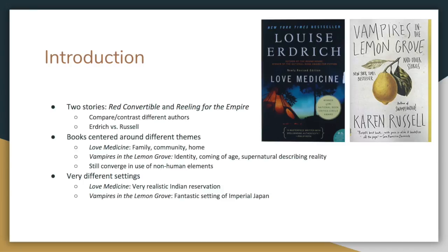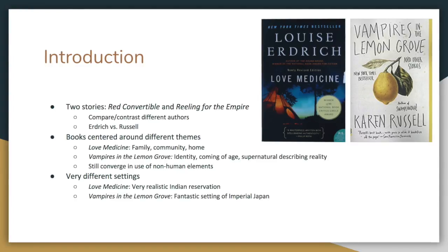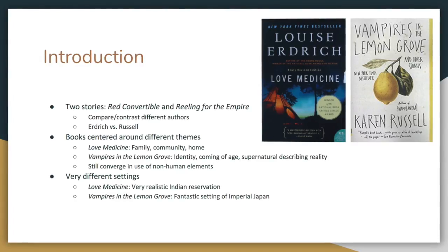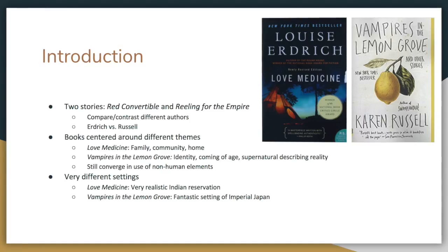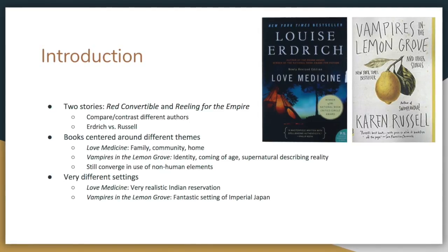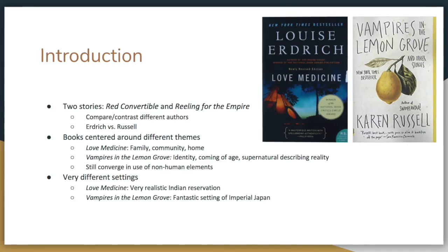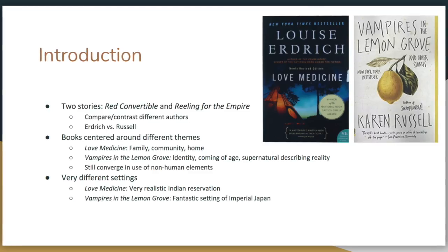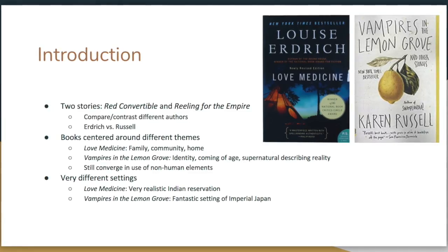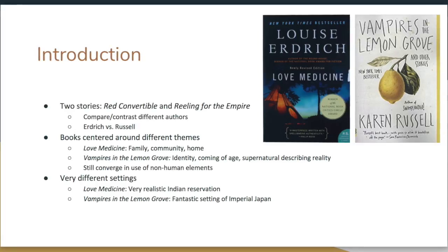Throughout the duration of this presentation, we're going to be looking at two stories: The Red Convertible from Louise Erdrich's Love Medicine, and Reeling for the Empire in Karen Russell's Vampires in the Lemon Grove. What we're really looking to do is compare and contrast these different authors — what their writing style is like, and more importantly, how they utilize non-human elements in similar or different ways, and how that utilization varies from book to book.